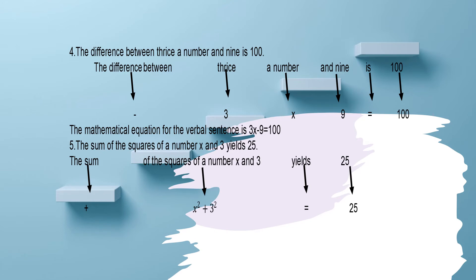Example number four: The difference between twice a number and 9 is 100. 'The difference between' indicates subtraction. 'Twice a number' gives us 2x, and then 9. 'Is' stands for equals, and then 100. Since it states 'the difference between twice a number and 9,' we place the subtraction sign between them. Therefore, the mathematical equation is 3x minus 9 equals 100.